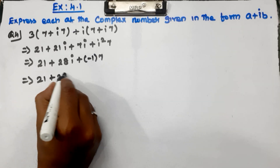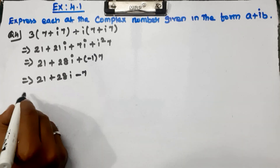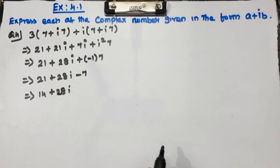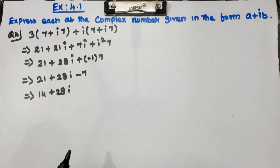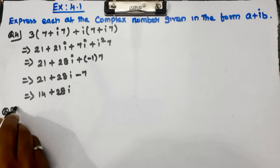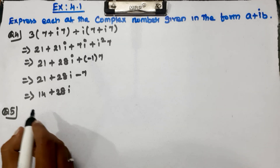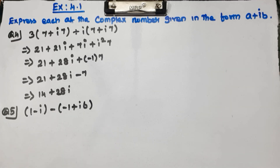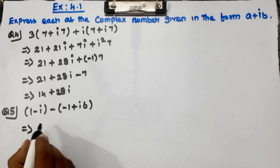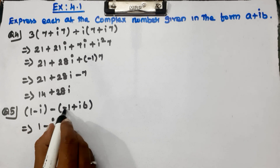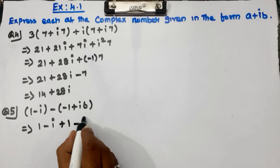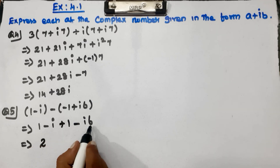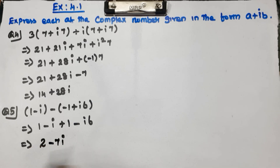For question number 4: 21 plus 28i minus 7 gives 21 minus 7 equals 14, so the answer is 14 plus 28i. Next, question number 5: 1 minus i minus of minus 1 plus i to the power 6. Here, minus into plus gives minus i to the 6th power. So 1 plus 1 equals 2, and we get 2 minus i minus i to the 6th. This is the answer for question number 5.